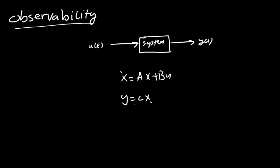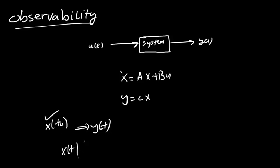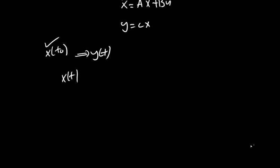The first condition: if the initial state vector X(t0) can be determined from the observation of Y(t) over a finite time interval, then we say the system is completely observable. The second condition: if all state variables X(t) have any effect on the output Y(t), then the system is completely observable.